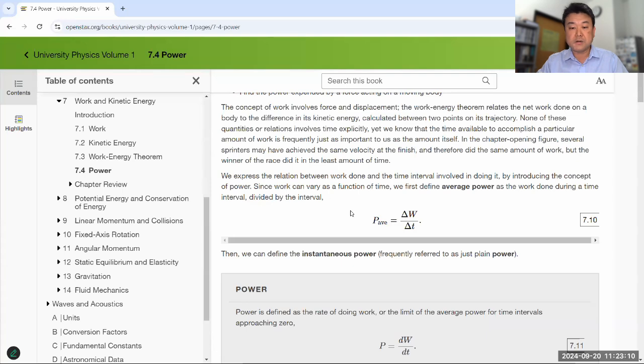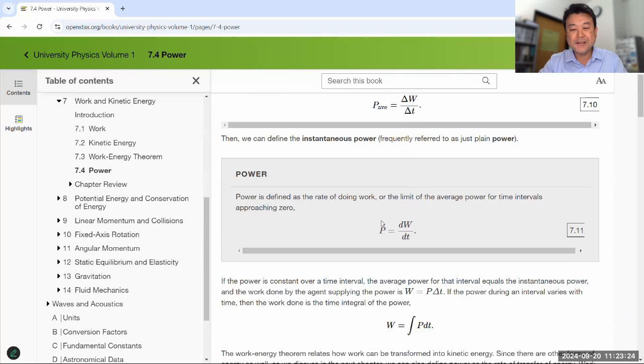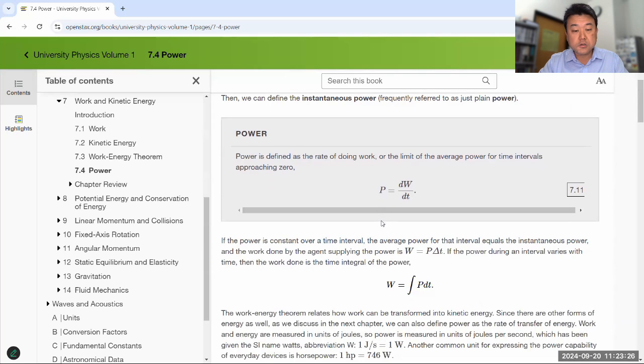But do remember the definition of power that it's an average power as the work done during a time interval divided by the time interval. Or if you want to talk about instantaneous power, then that would be this turned into delta t being infinitesimally short, so that magic of calculus limit as delta t goes to zero. That's the derivative. So know the definition of power.